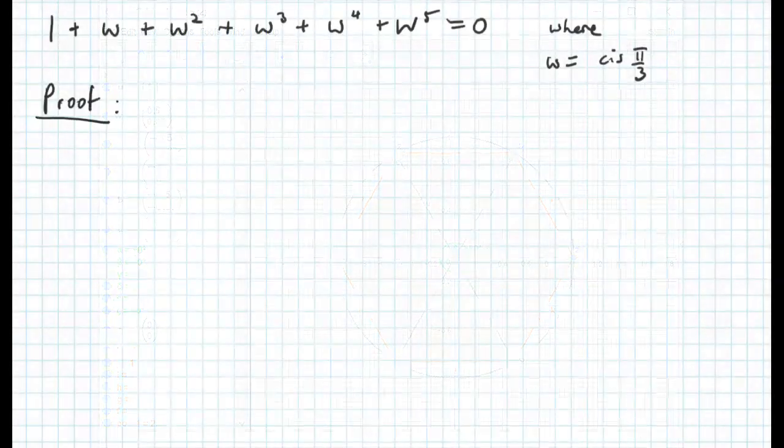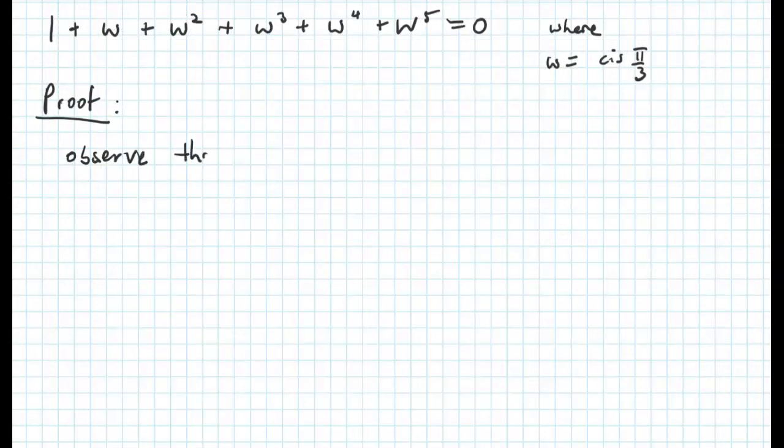We end this video by providing an algebraic proof that 1 plus w plus w squared, up to w to the power 5 equals 0. We begin by observing that if w is a root of z to the 6 equals 1, then w to the power of 6 minus 1 must equal 0.